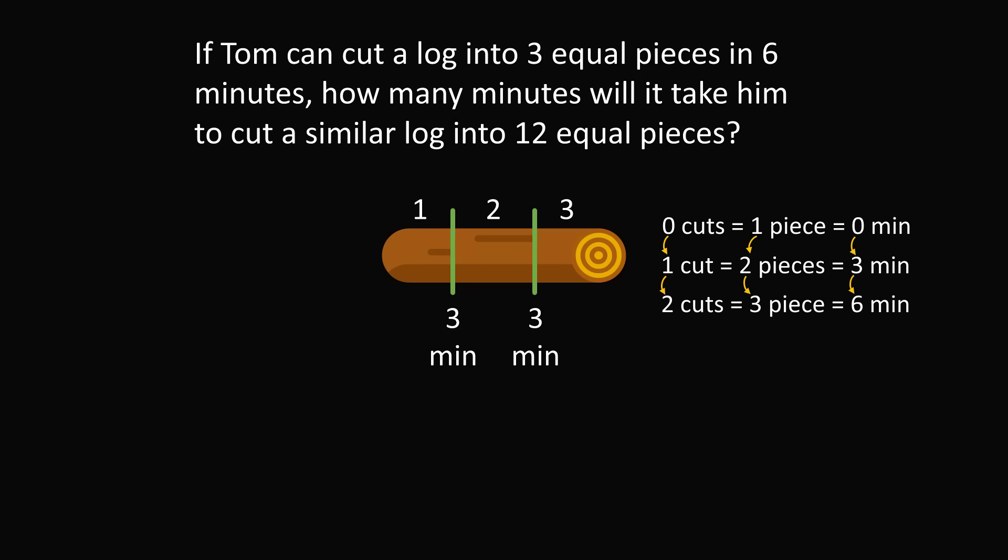So we go ahead and repeat this pattern. 2 cuts will be 3 pieces, which takes 6 minutes, and we now need to go all the way up to 11 cuts, which equals 12 pieces. So we take 11 cuts at 3 minutes per cut, which will be 11 times 3, which equals 33 minutes. So the correct answer is C, 33 minutes.